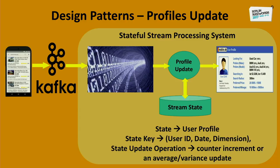How do we actually build such a scalable system that updates profiles in real time and serves them in real time? In a nutshell, it's just a stateful stream processing system. We have our events coming from Kafka as our stream source. We have some kind of framework - Flink, Kafka Streams, Spark - processing our events. Most of those frameworks have support for keeping the stream state in some manner. In the context of user profile, the state can be as simple as the user profile itself. The state key can be combined, for example, from user ID, date, and dimension, because we want to allow stakeholders to request the user profile for specific date ranges or only specific sets of dimensions. The state update operations are quite straightforward - a simple counter increment or some sort of average/variance update.